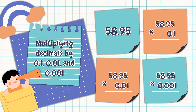We are done multiplying 58 and 95 hundredths by one-tenth and the answer is 5 and 895 thousandths. This time, let's multiply it by one-hundredth.